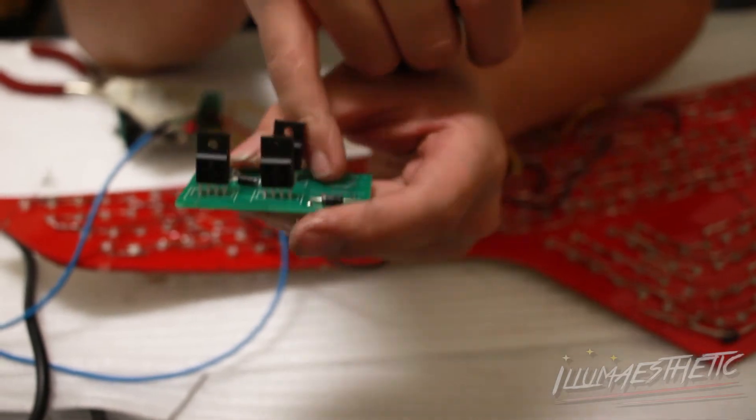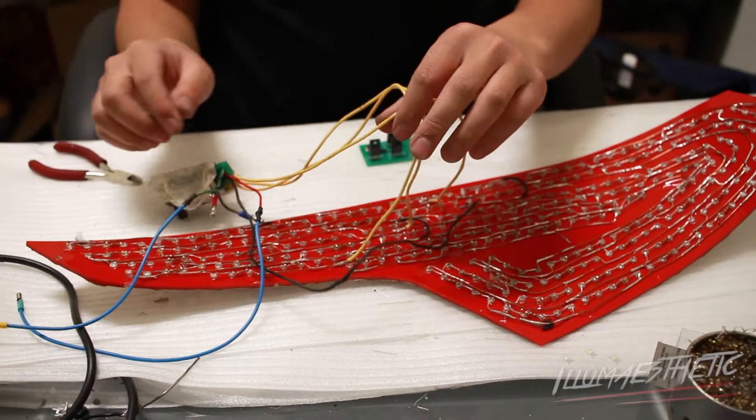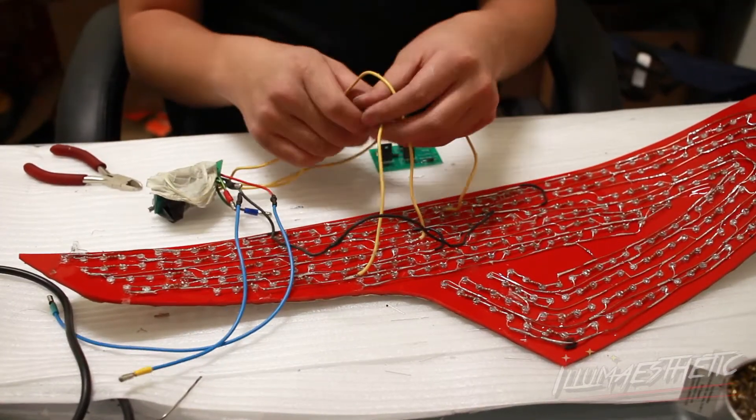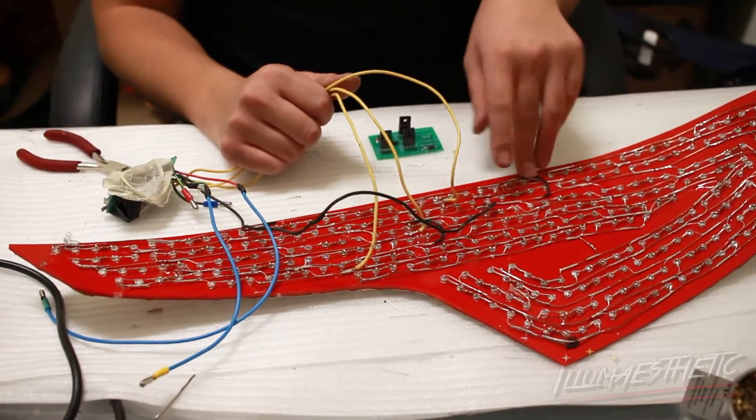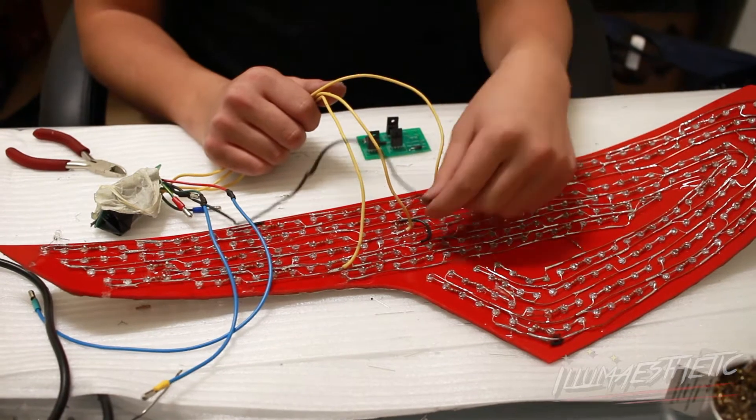So the LED sections are what connects to this board. You can see here there's three yellow wires and a black wire. These three yellow wires represent the power for each of the three sections: the red, yellow, and white sections. The ground is a universal ground, so each section is connected together by this one ground.